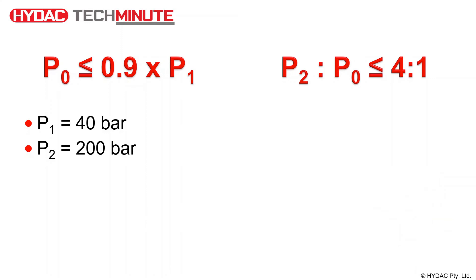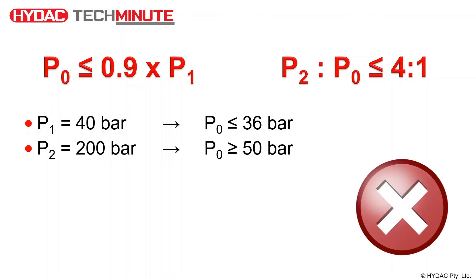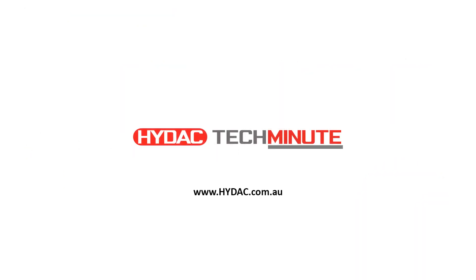Using the same method, we can determine the pre-charge pressure using the minimum system pressure of 40 bar and a maximum system pressure of 200 bar. We can see that when calculated, the pre-charge pressure would need to be less than or equal to 36 bar, but at the same time, greater than or equal to 50 bar. Clearly, this isn't possible and in this scenario, an adjustment to the minimum and maximum system pressures or change in accumulator type may be required.